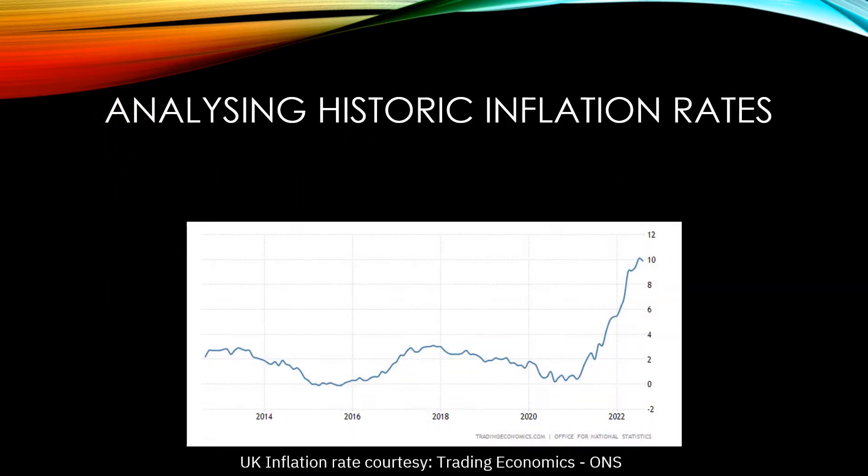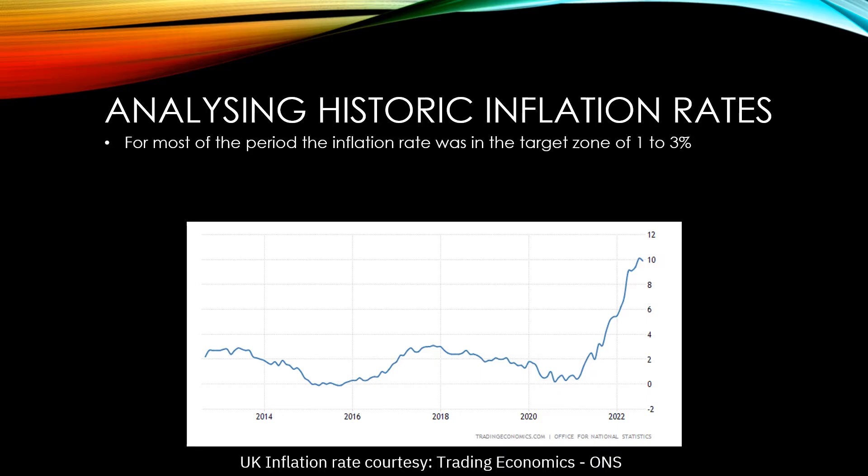This graph shows the UK inflation rate for the last 10 years. For the majority of the period, inflation has been in the government's target zone of 1–3%. At the end of the period, inflation had become very high, reaching around 10%.